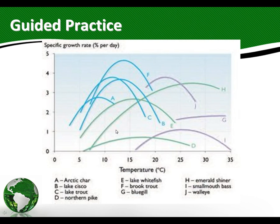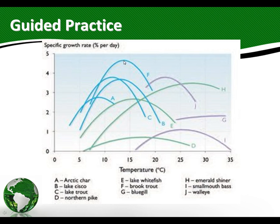Here's a tolerance curve that actually applies to growth rate, percentage per day, for different types of fish, labeled at different temperatures. The higher the peak of the curve — this little guy right here is the highest; this is letter F, so we'll go down and look: this is the brook trout. He has a growth rate of about 4.5% per day when the temperature is somewhere around 13.5–14 degrees Celsius — that's optimum for him.